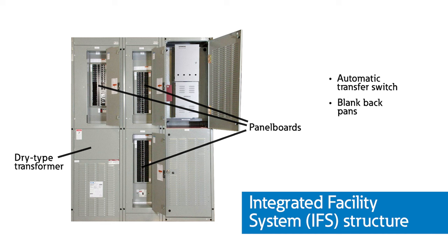Last but not least, an integrated facility system switchboard structure includes panel boards, dry type transformers, transfer switches, and blank backpans for field mounting other equipment. The IFS is helpful to integrate other equipment into a switchboard. In most installations, switchboards are mounted close to the wall and are front accessible only. If required, the switchboard can be constructed to allow both front and rear access.